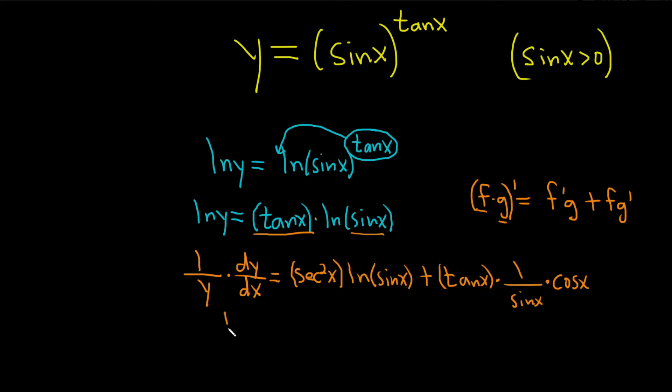Oh, this is cool. This is 1 over y. Something's going to happen here, I think. dy dx equals, we still have our secant squared x, and our natural log of sine x. I think this is tangent, and cosine over sine is cotangent. Wow,